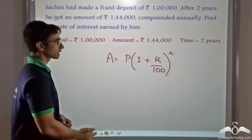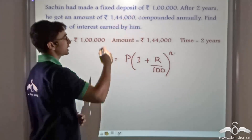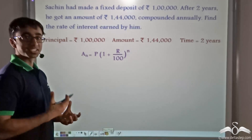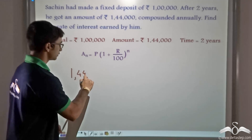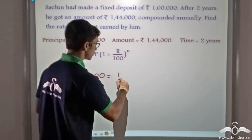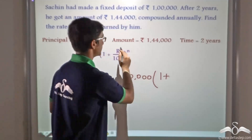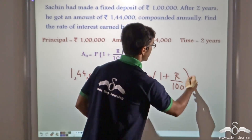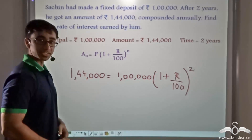Where N is the time, R is the rate which we have to find out, P is the principal which is 1 lakh, and A is the amount received. Replacing the values: A = 1 lakh 44,000, P = 1 lakh, and N = 2 years. This is the equation we obtain.